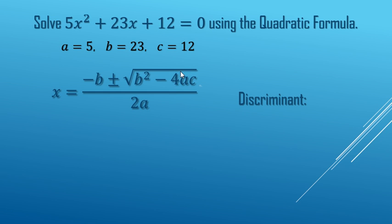We are going to break it up, and we're going to start with this part right here, b squared minus 4ac. It's called the discriminant.